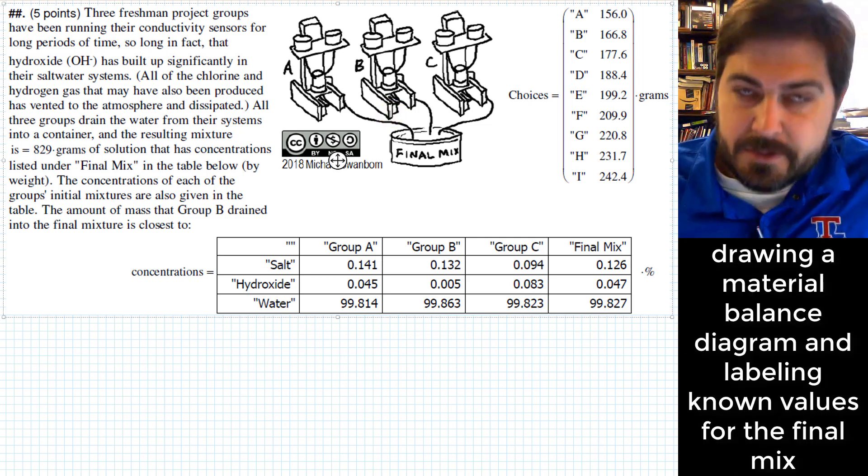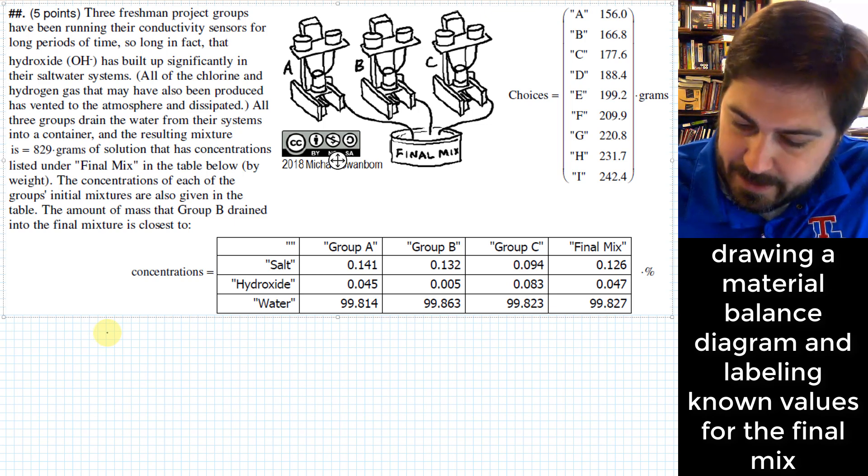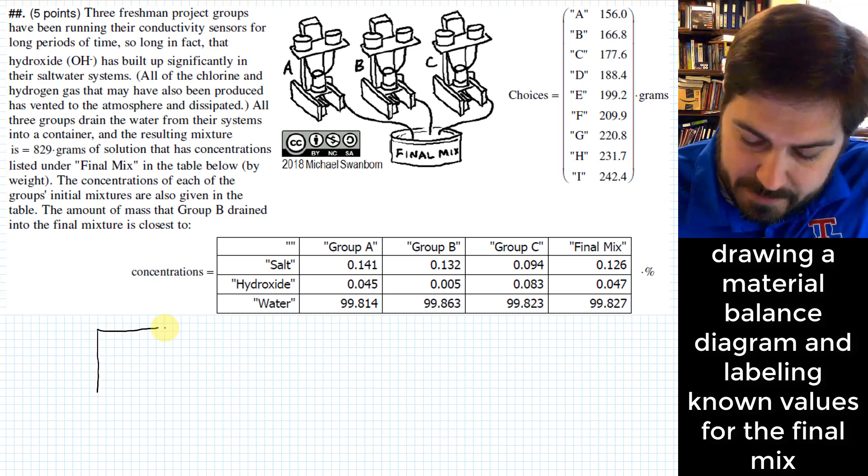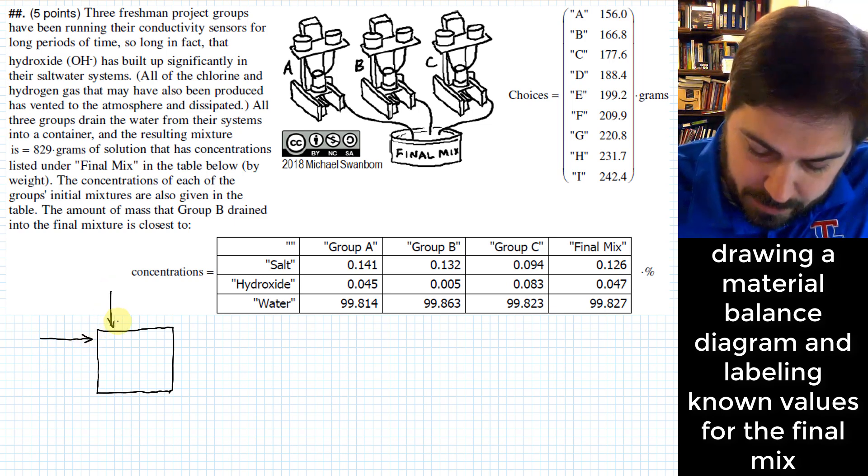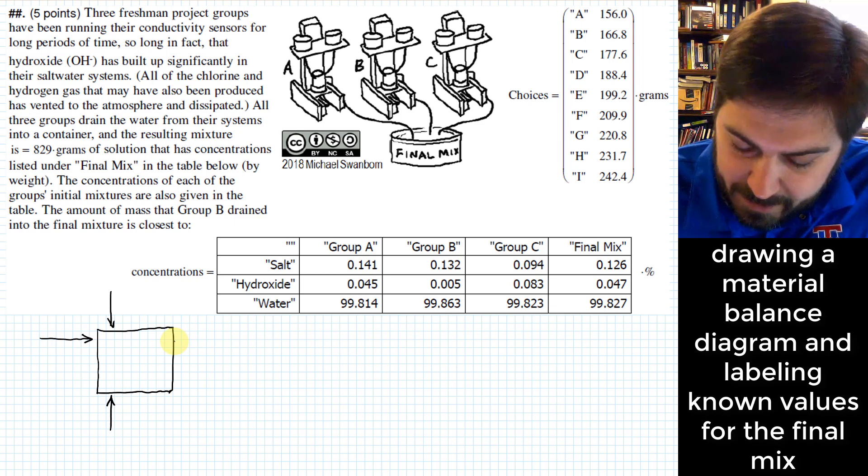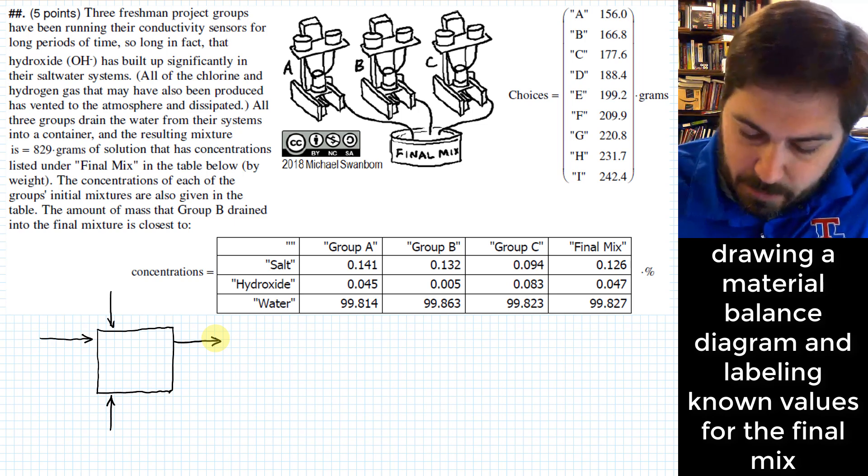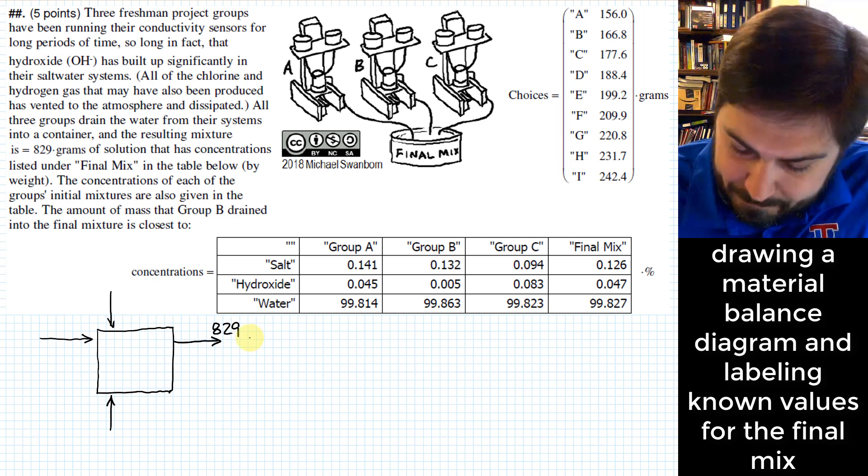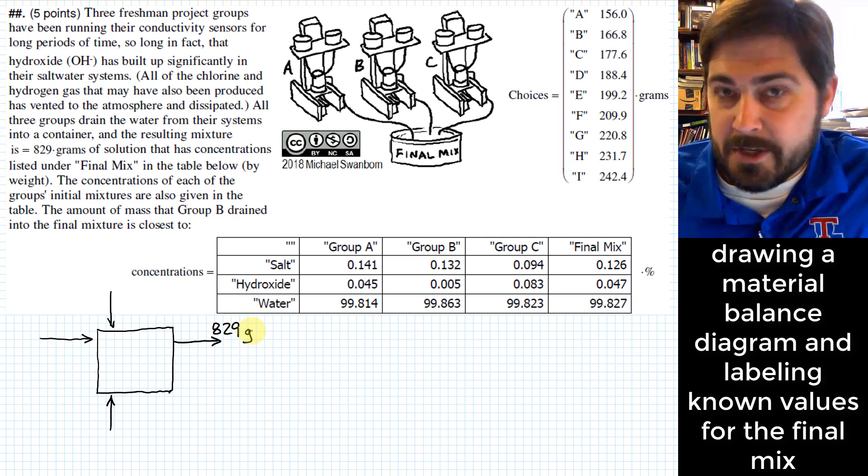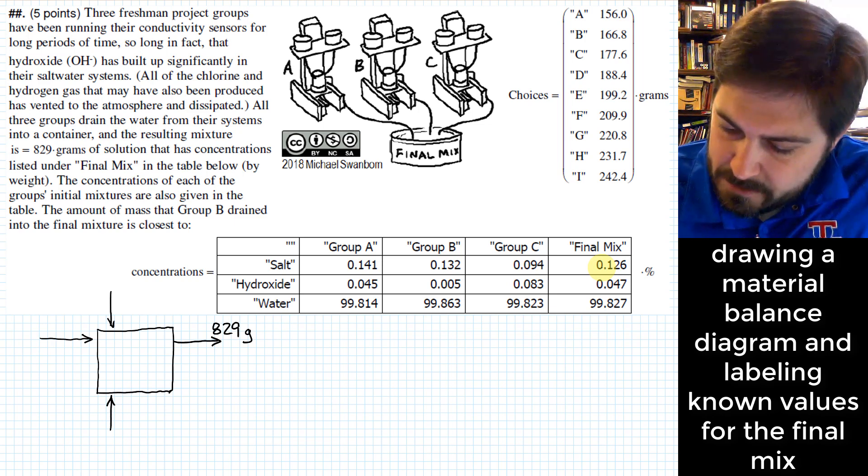So where we need to start with this is we need to draw a little picture that shows all of the flows in and out of this system. And what we mean by that is we think of each of the three systems. I'll draw one there, I'll draw one here, and I'll draw one here. These are the three flows into the final mix and we'll kind of identify that final mix as what flows out of the system, that batch that got mixed up. And we know that that's 829 grams that comes out right there.